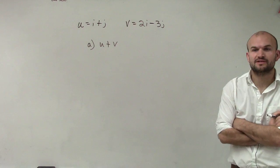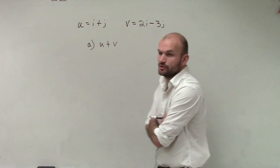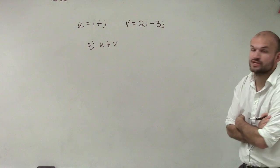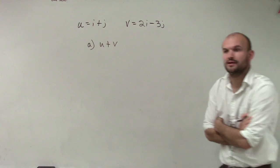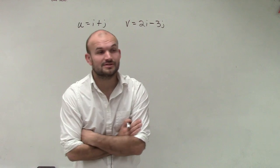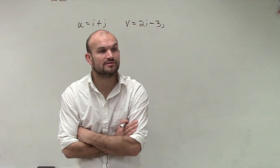Okay, so what we have is two vectors. We have one vector u, which is i plus j, and then we have the other vector v, which is 2i minus 3j. What they're asking us to do is u plus v, and then also to sketch the result in vector form.